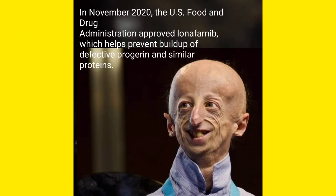Is there any treatment for progeria? Progeria has no cure. Research is ongoing to develop drugs against it. However, in November 2020, the US Food and Drug Administration approved a drug called Lonafarnib. This drug prevents the buildup of defective progerin and similar proteins that accumulate in the body.